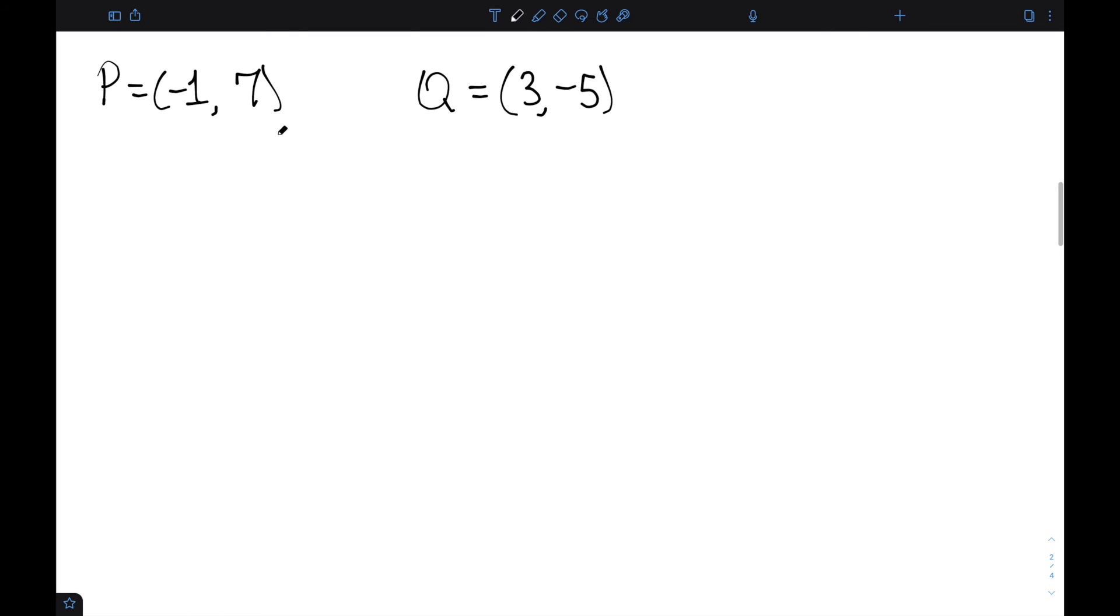Let's consider our points (-1, 7) and (3, -5) again. So this is x1, y1, and this over here is x2, y2.